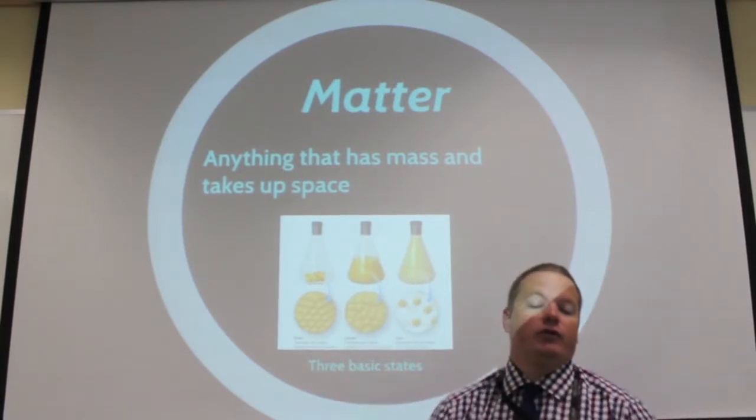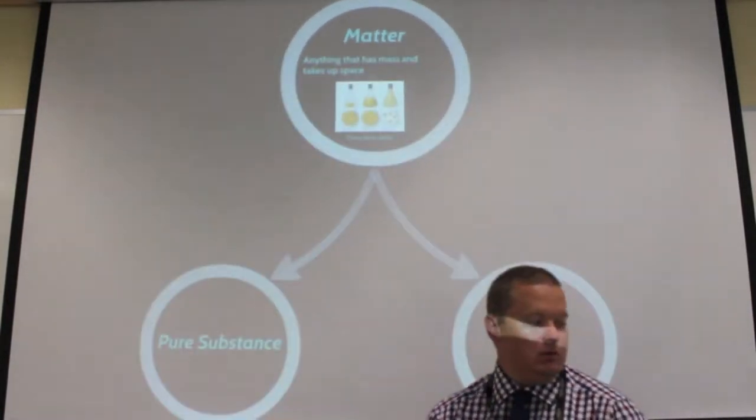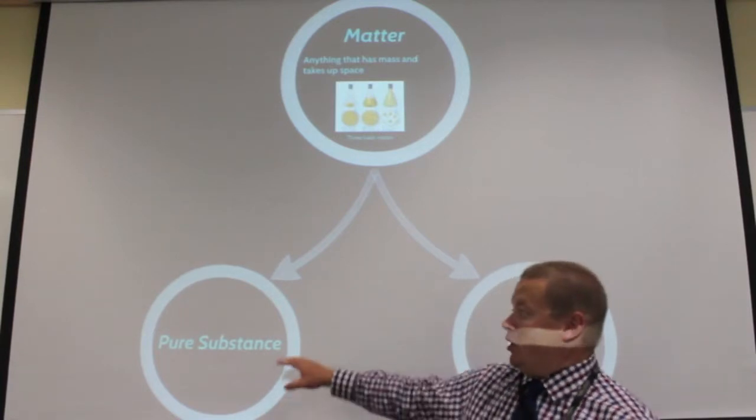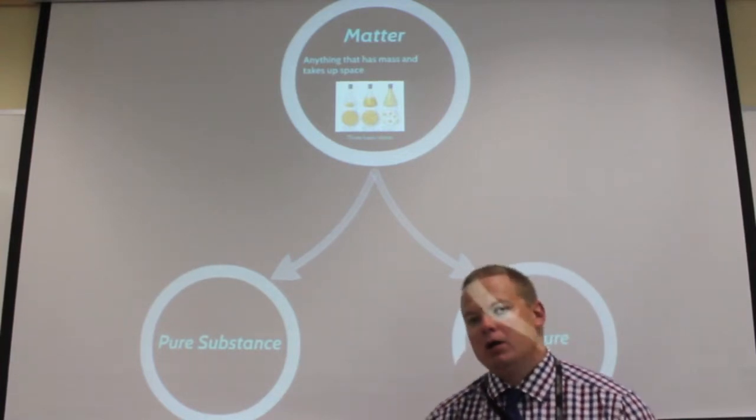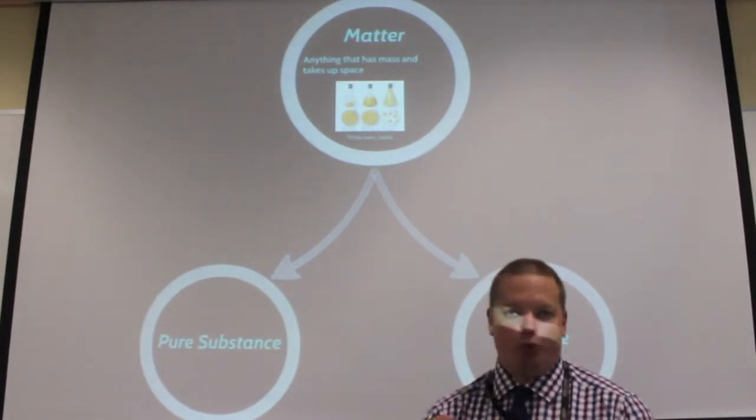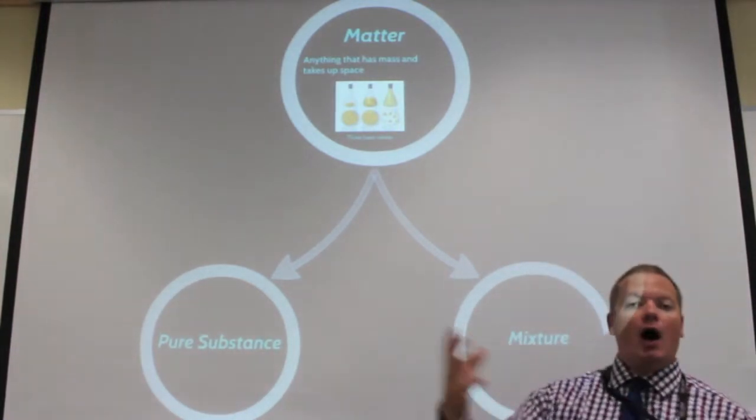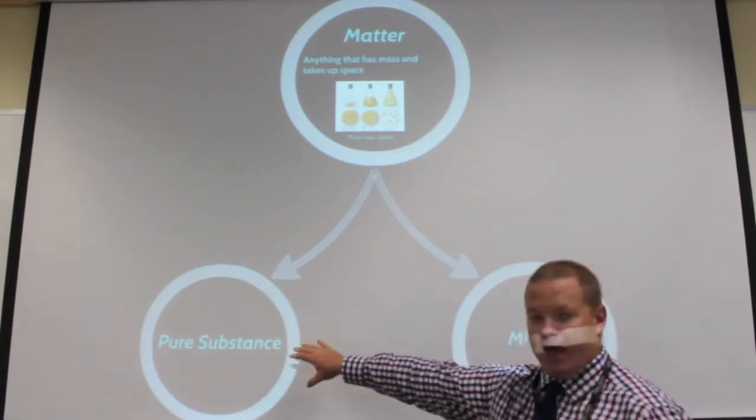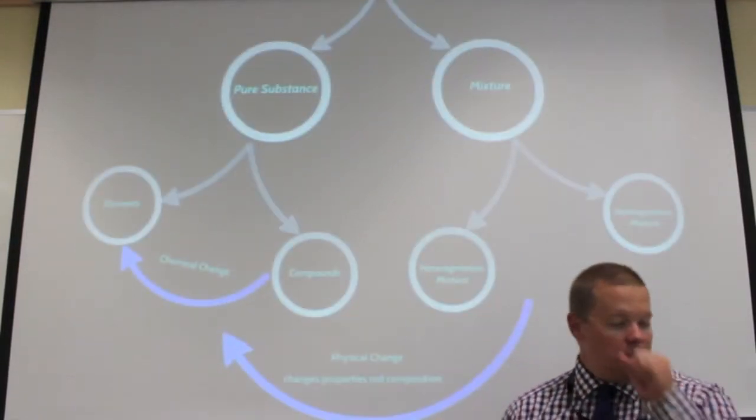We can break matter into these two very simple classifications. We have what we call pure substances, which we can't break down any further without actually changing what they are. They're the simplest—they're pure substances we can't break down further without changing. And then we have mixtures, which are a combination of these pure substances. Those are the distinctions: something that can't be broken down any further, or something that can be, which we'll call a mixture.